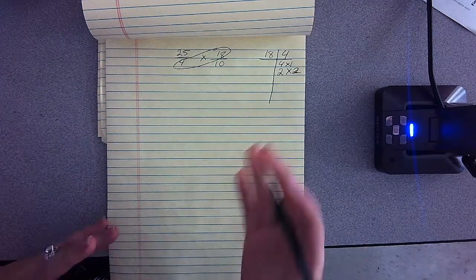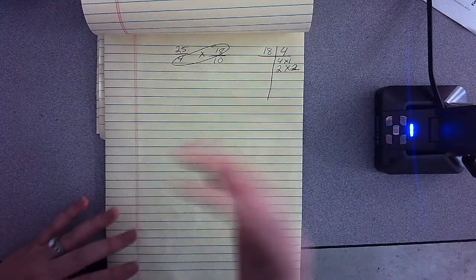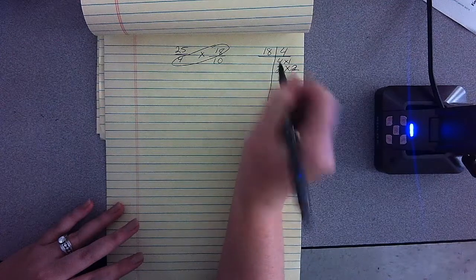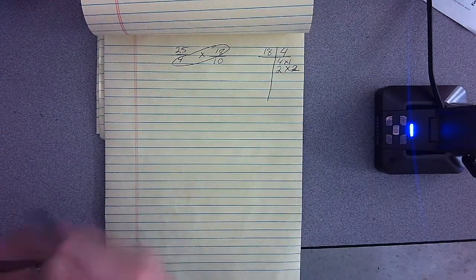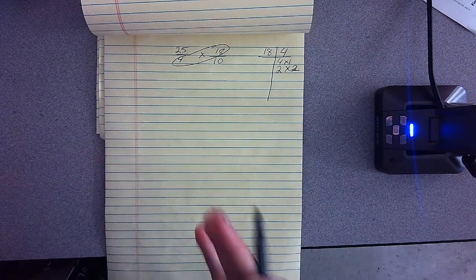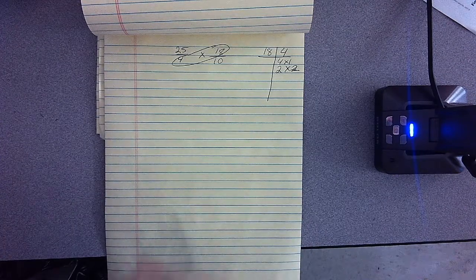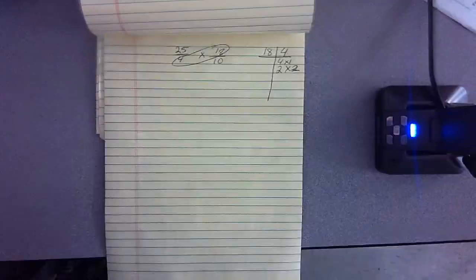So those are all my factors of four. So I look over at 18 and I'm hoping that 18 has a factor of four because I want to find the greatest common factor, meaning that I want to find the factor that has the largest value.